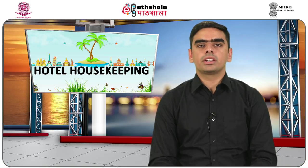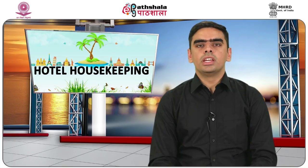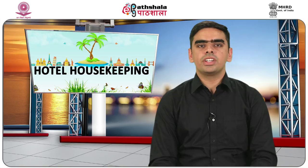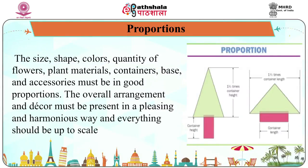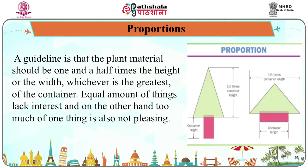Style on the basis of effect: symmetric and precise arrangements set by management are known as formal arrangements, while the opposite — freestyle — is known as informal arrangement, where emphasis is given to the beauty of each plant instead of geometric patterns. Proportion is key: the size, shape, color, and quantity of flowers, plant materials, containers, base, and accessories must be in good proportion. The overall arrangement and décor must be pleasing and harmonious. A guideline is that the plant material should be one and a half times the height or width, whichever is greatest, of the container. Equal amounts of things lack interest, and too much of one thing is also not pleasing.